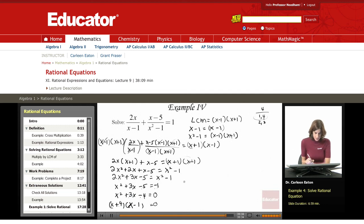Using the zero product property, I'm going to get x plus 4 equals 0 and x minus 1 equals 0. Therefore, x equals negative 4 and x equals 1.